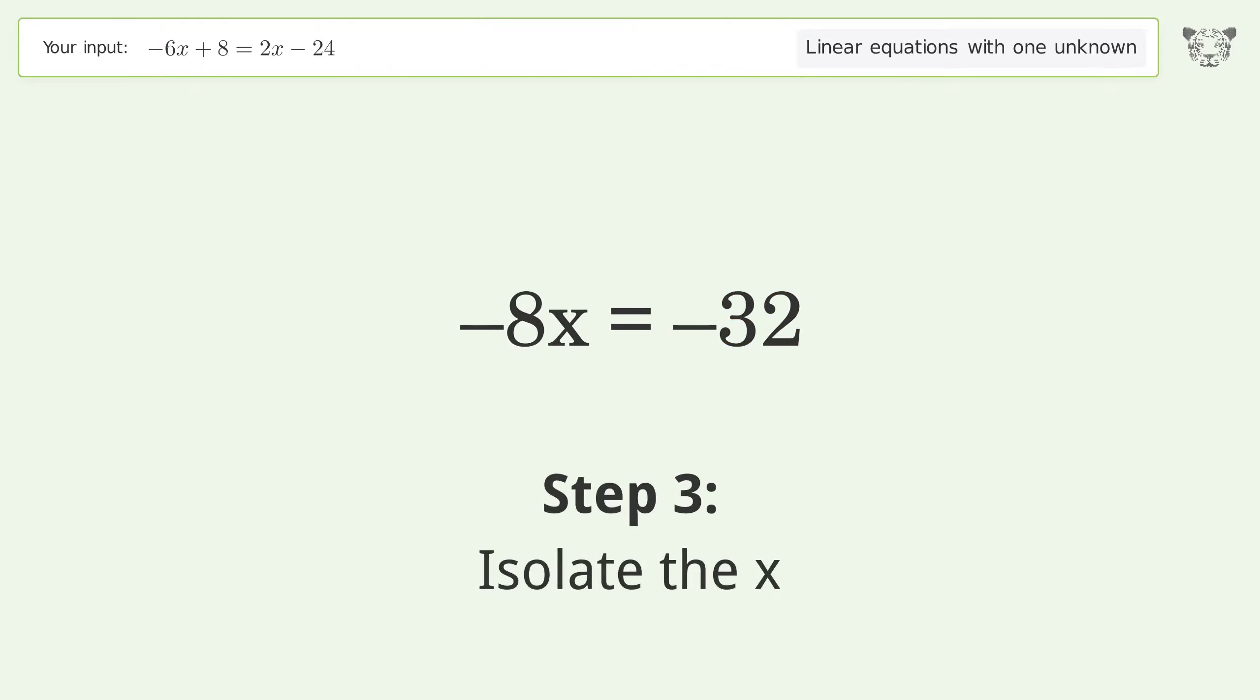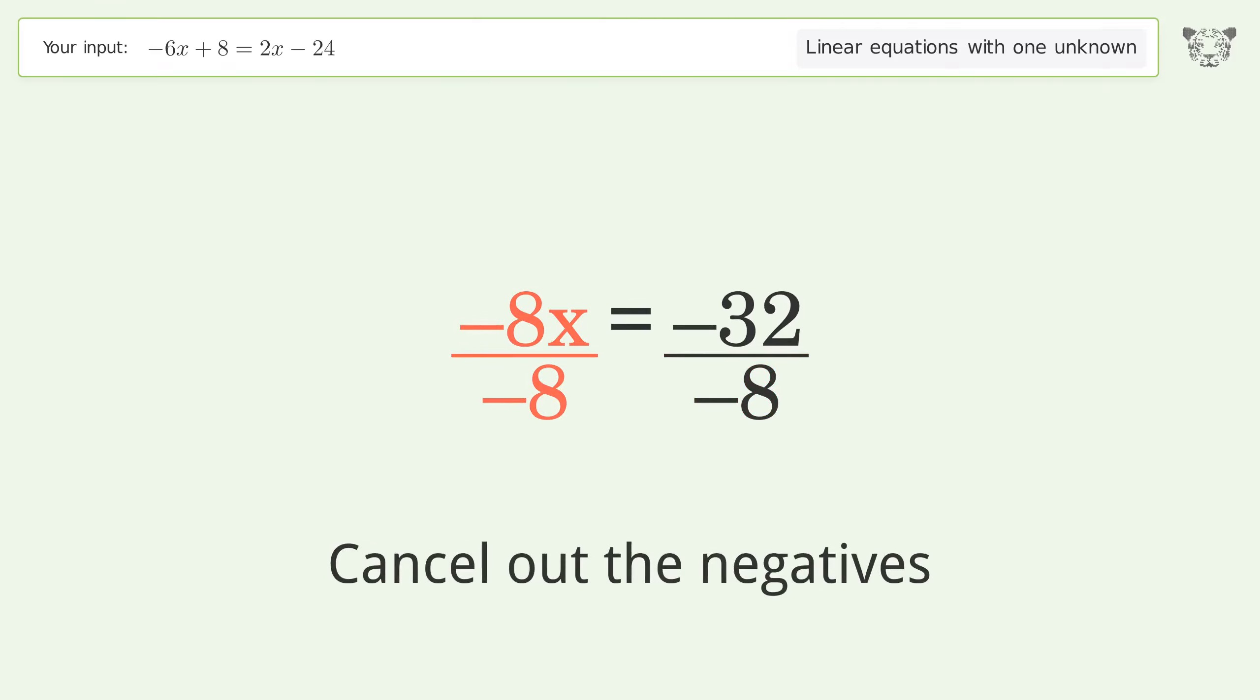Isolate the x. Divide both sides by negative 8. Cancel out the negatives. Simplify the fraction. Cancel out the negatives.